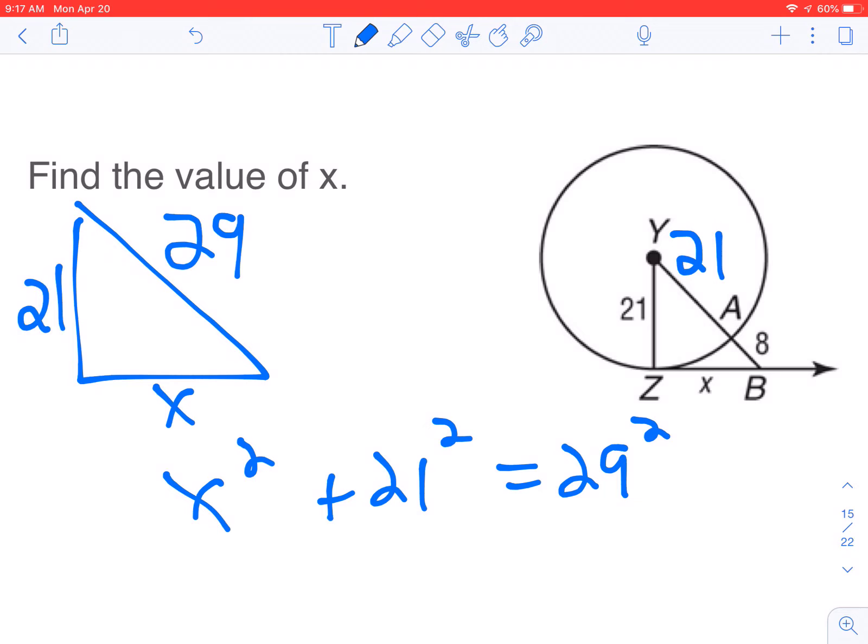So I'm going to quick do it in my calculator. We have 21 squared, which equals 441. 29 squared, which equals 841 minus 441. x will equal 20.